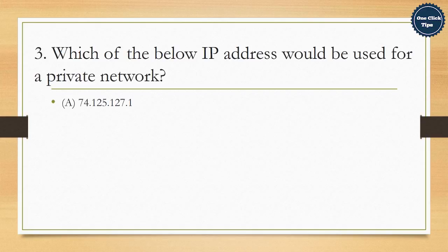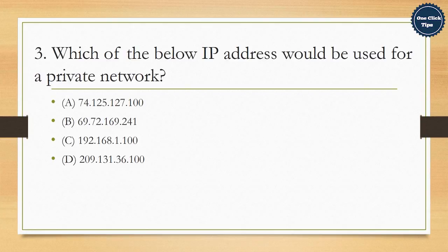3. Which of the below IP address would be used for a private network? A. 74.125.127.100, B. 69.72.169.241, C. 192.168.1.100, D. 209.131.36.100. The correct answer is C. 192.168.1.100.